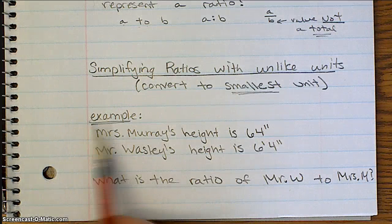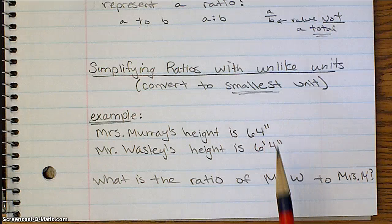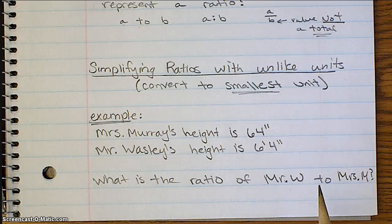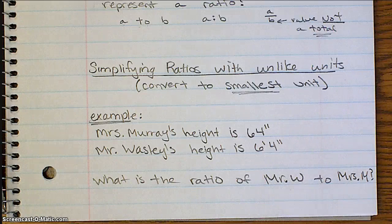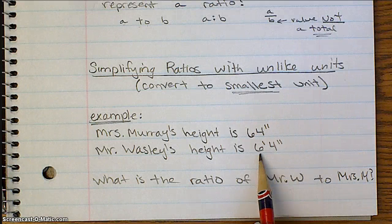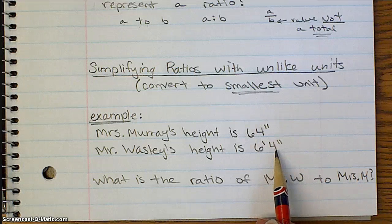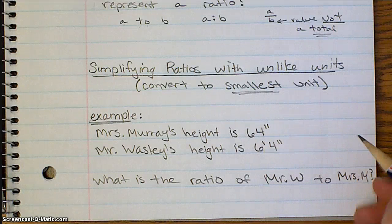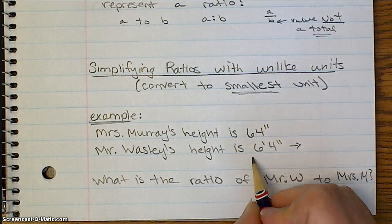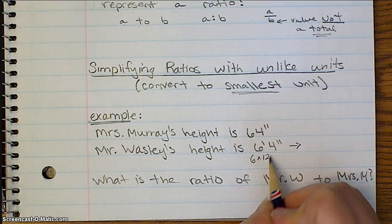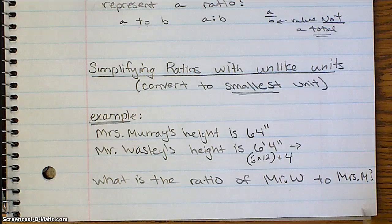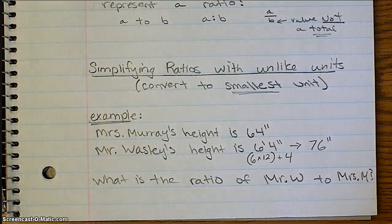Okay, here's an example. So, my height, 64 inches, Mr. Wosley's height, 6'4". What is the ratio of Mr. Wosley's height compared to my height? Well, right now, it's kind of hard to do that, because Mr. Wosley is using feet and inches, but I'm only using inches. So, we need to first convert Mr. Wosley's height into inches. So, every foot is 12 inches, so 6 times 12, and then add those 4 extra inches. And you should get 76 inches.